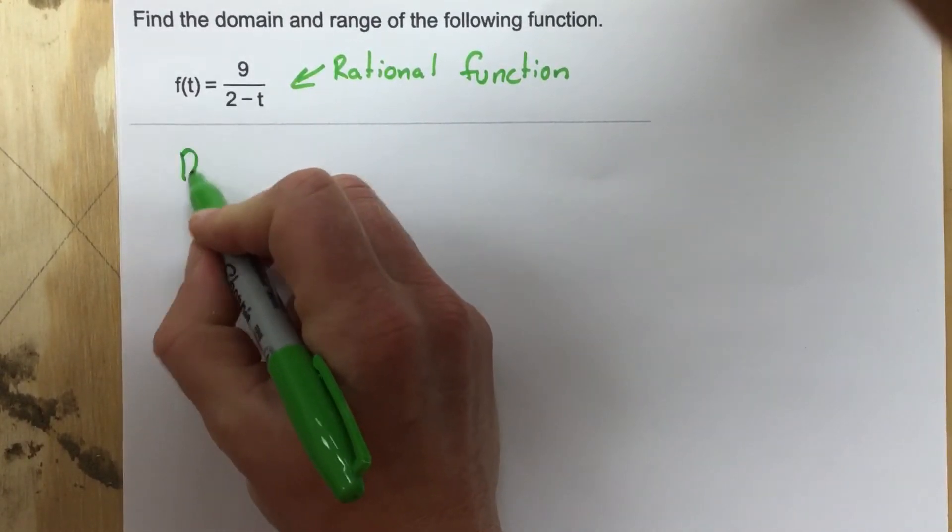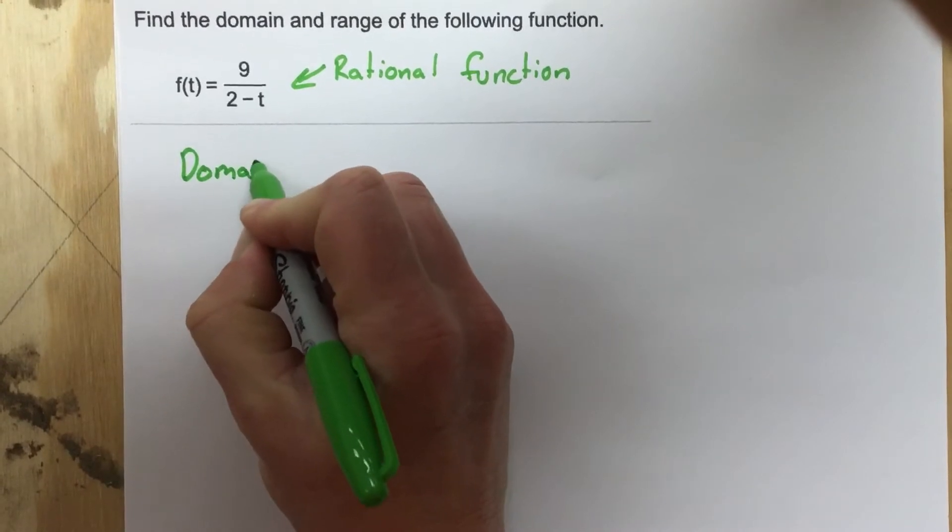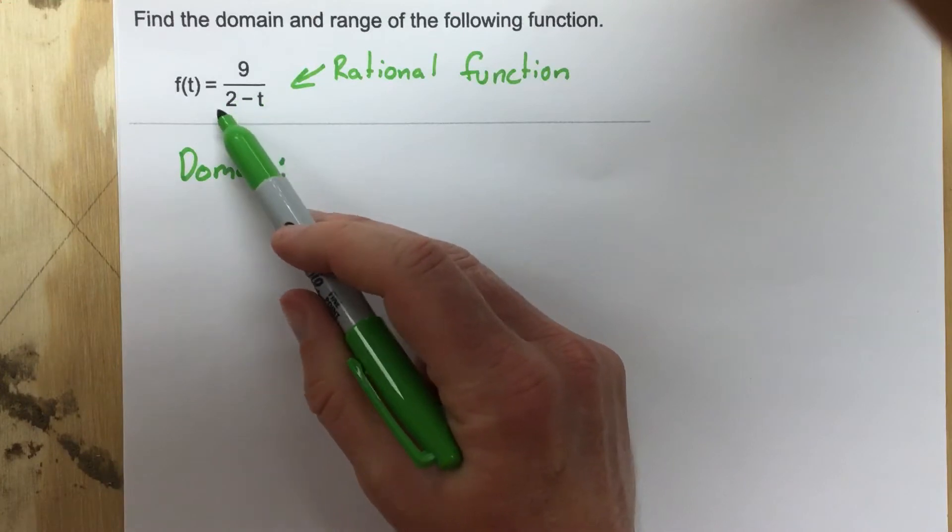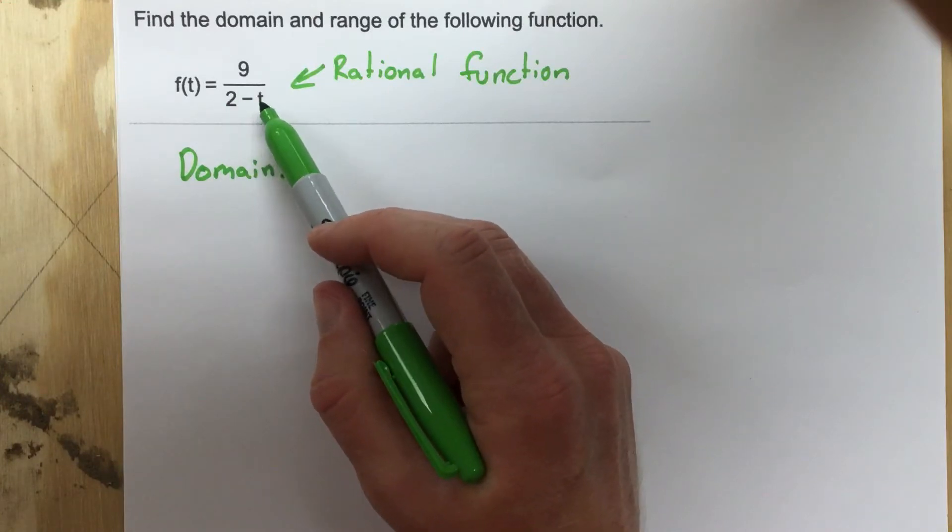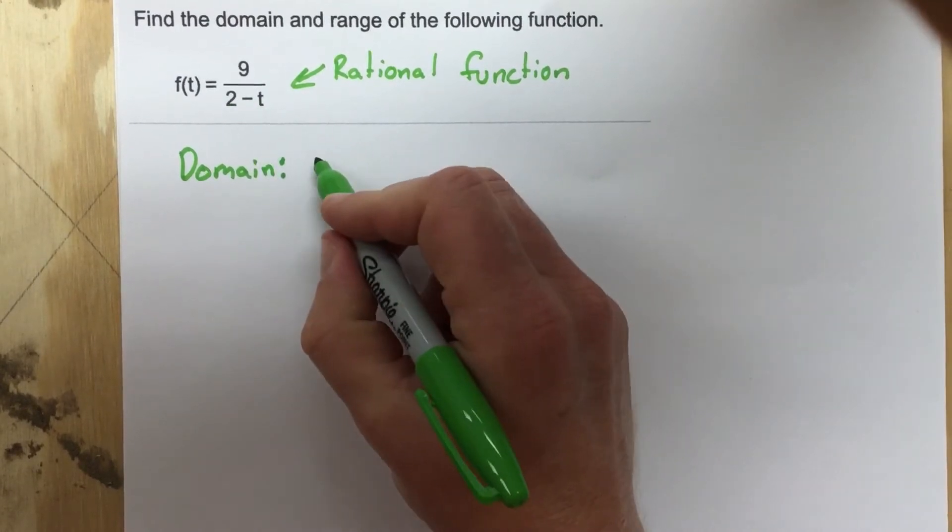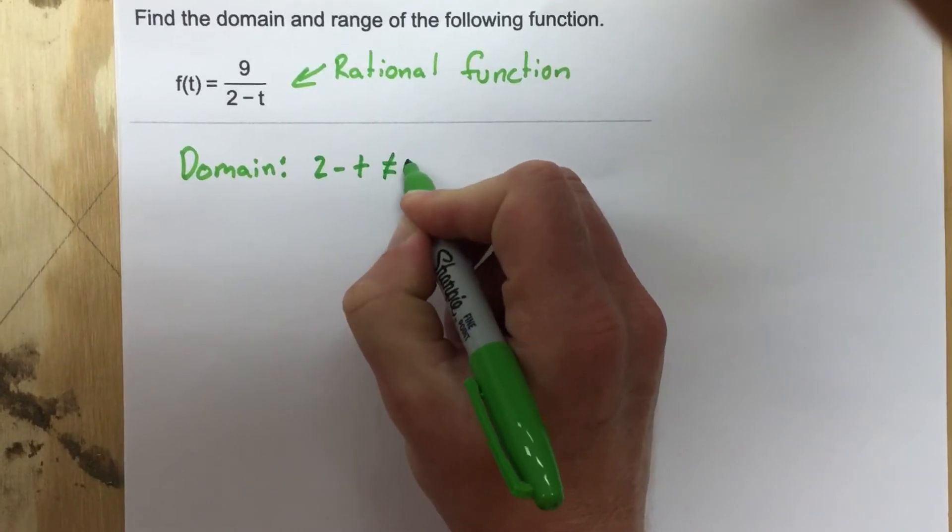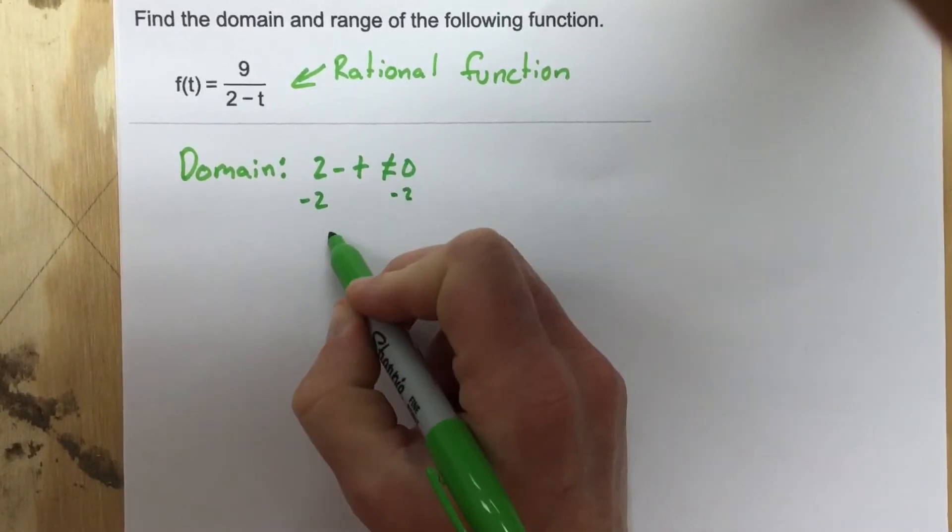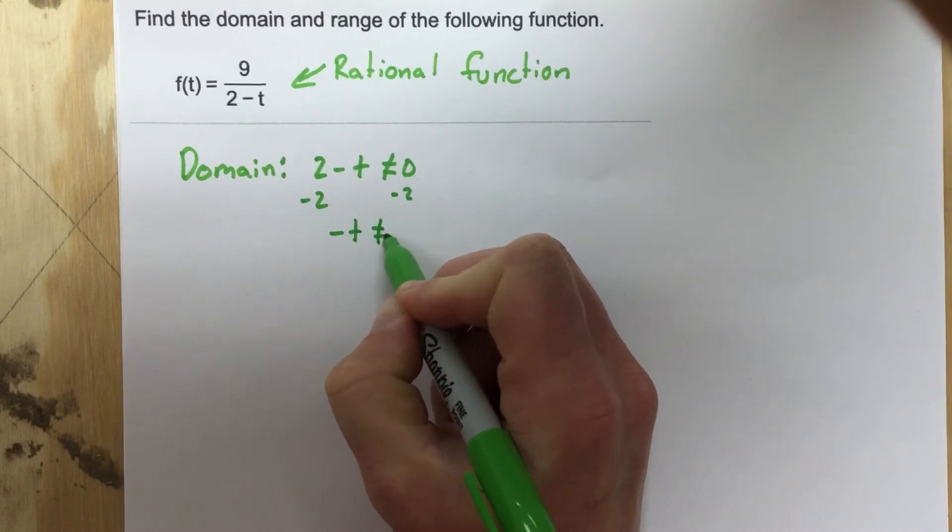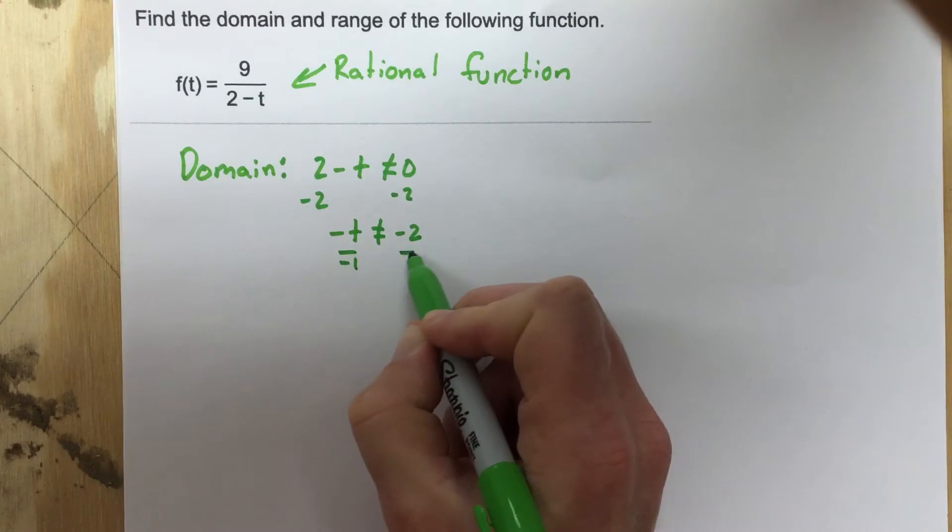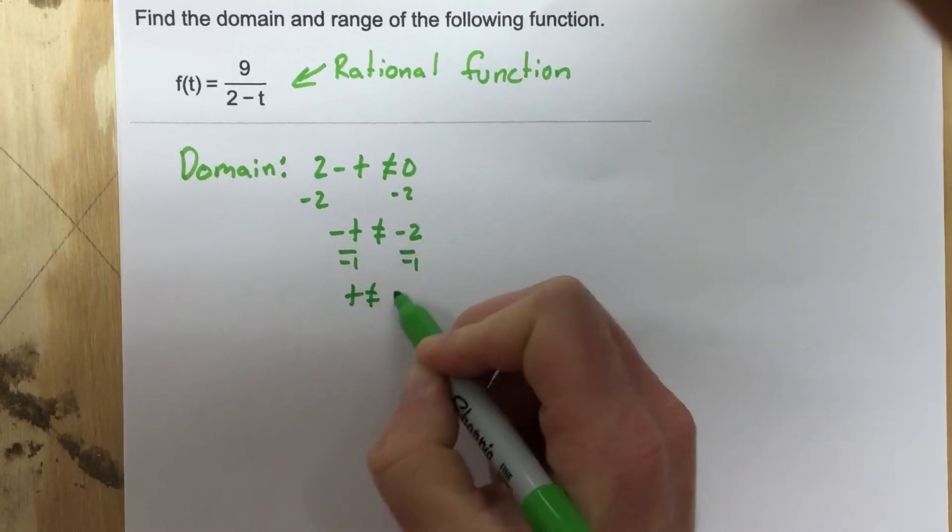If we want to find the domain of that, anytime you want to find the domain of a rational function, typically you're going to take the denominator and set it equal to 0 and figure out what value for t makes the denominator 0 because we cannot have 0. So I'll say 2 minus t cannot equal 0. Then I'm going to subtract 2 from each side. That's negative t cannot equal negative 2. Divide by negative 1 on each side and you get t cannot equal 2.